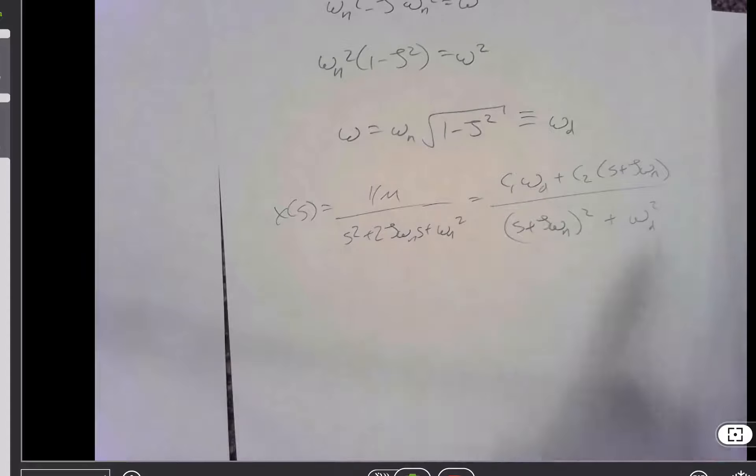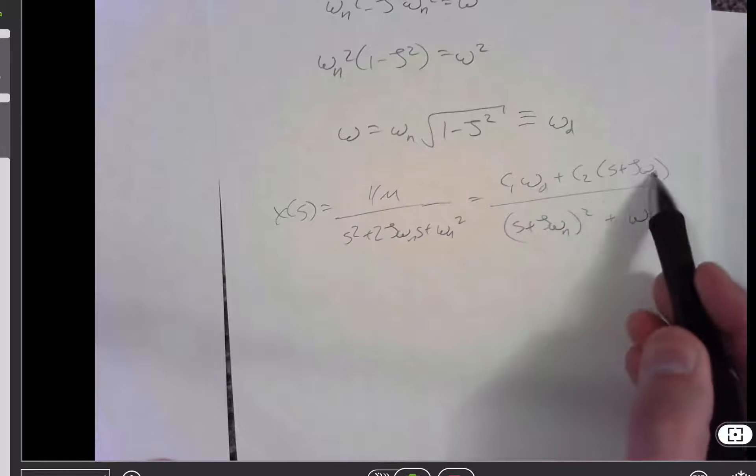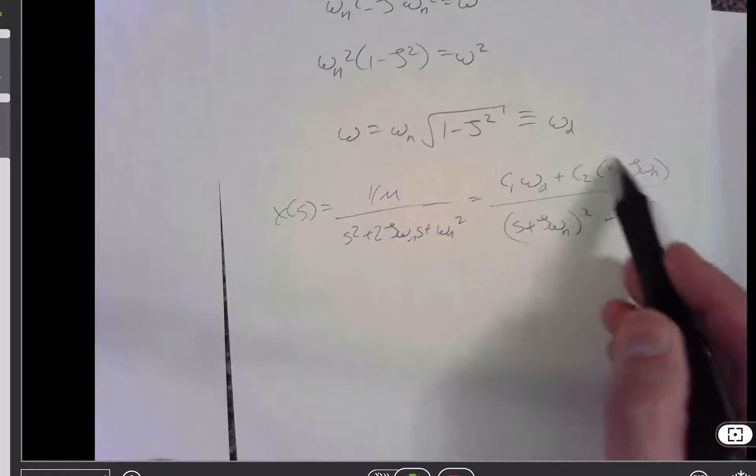And it turns out if I multiply through by the denominators, since they're equal, I get that 1 over m has to equal c1 omega d plus c2 s plus zeta omega n. Well, this has to go to 0.